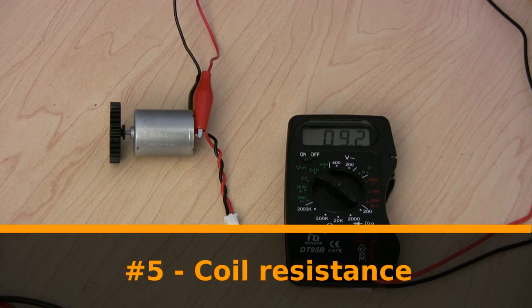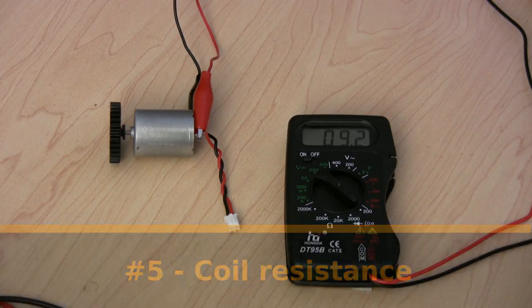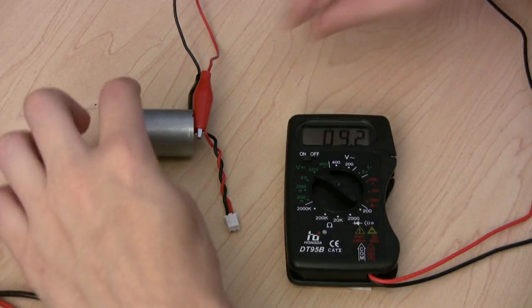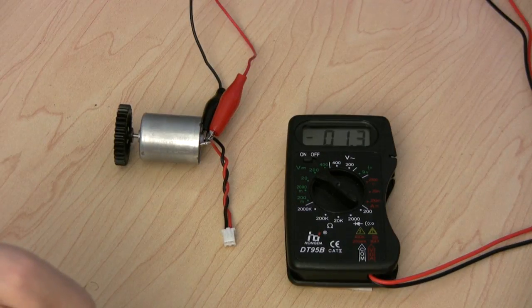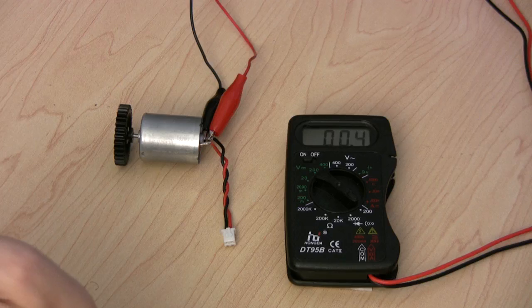Number five: We can measure the resistance of the coils. We get about 9 ohms. A little trick we can do is to just measure the resistance of the multimeter leads, and subtract that from our earlier measurement.